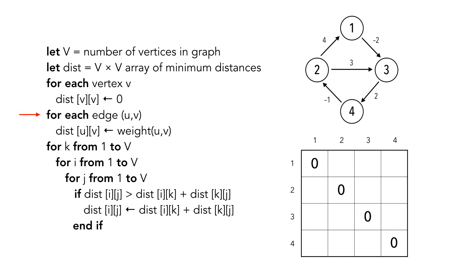Our next step is to loop through the edges of our graph and fill in the table with the corresponding weight. We'll start with edge 1, 3, which has a weight of negative 2, and add its value to our table. We loop through the remaining edges, adding their weights.